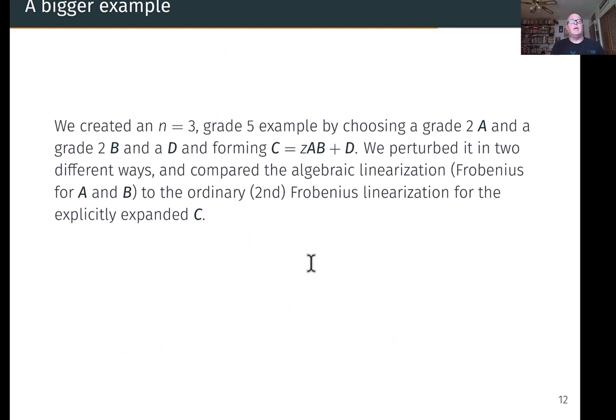Let's try a bigger example. We created a dimension 3, so 3 by 3 matrices, grade 5 example, by choosing two random matrix polynomials of grade 2, dimension 3, and a dimension 3 matrix D. These are just chosen at random, and I formed C equals z times A times B plus D. We perturbed it in two different ways: you kick the A and B separately, or you kick the C. We compare the algebraic linearization made of the Frobenius linearization of A and the Frobenius linearization of B to the ordinary Frobenius linearization for the explicitly expanded C.